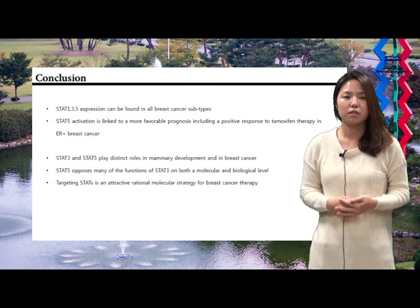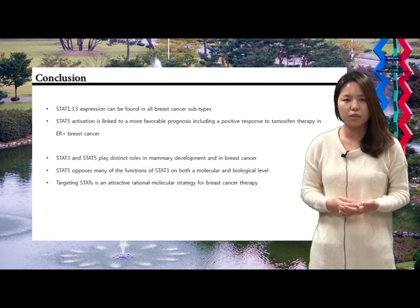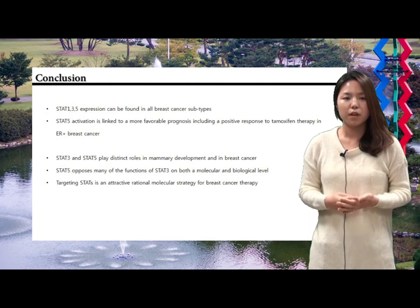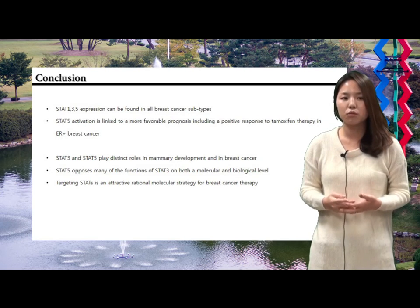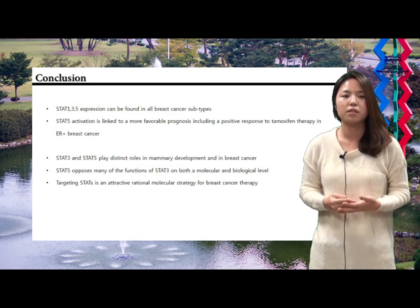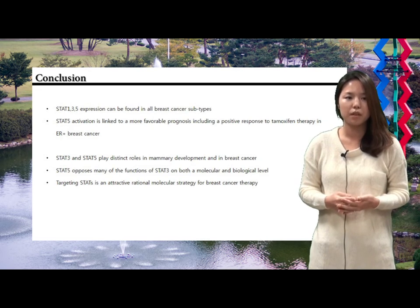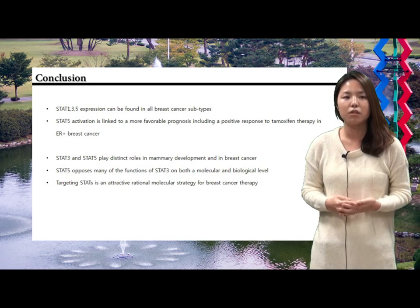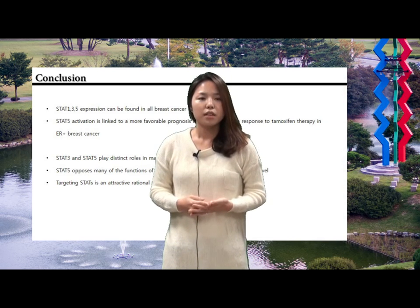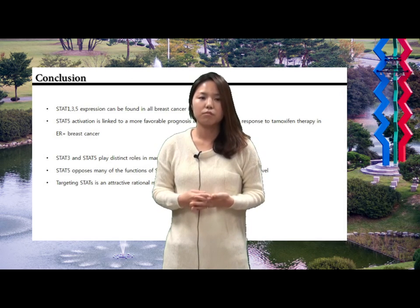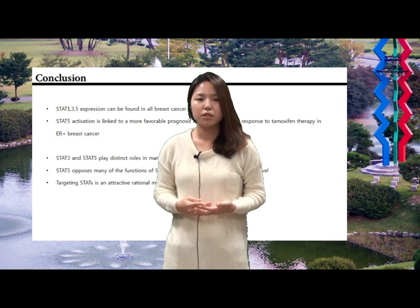In conclusion, I talked about the status of STATs in different subtypes of breast cancers. STAT 1, 3, and 5 expression can be found in all breast cancer subtypes. Especially, STAT 5 tends to be more associated with ER positive breast cancers, while STAT 3 is linked to more aggressive triple negative breast cancers. STAT 5 activation is linked to a more favorable prognosis, including a positive response to endocrine therapy in ER positive breast cancers. Also, STAT 5 opposes many of the functions of STAT 3 at both the molecular and biological level. Targeting STATs is an attractive molecular strategy for breast cancer therapy when we know their expression status in the cancer.